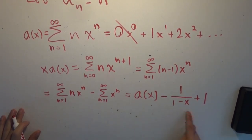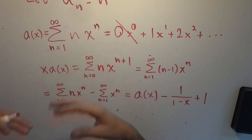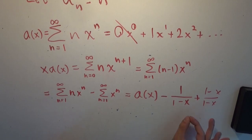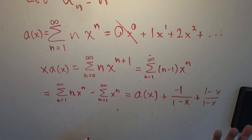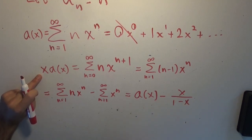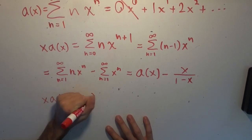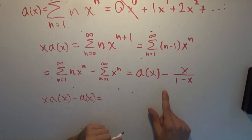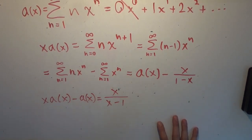So x times A of x equals A of x minus x over one minus x. We can write one as one minus x over one minus x, and combining gives us minus x over one minus x. Subtracting A of x from both sides: x times A of x minus A of x equals x over x minus one, by pulling the negative into the denominator.